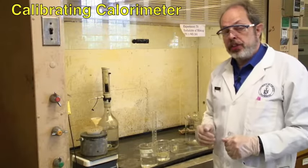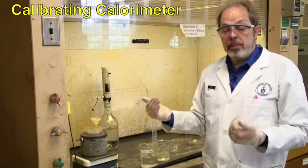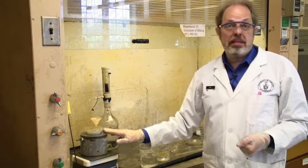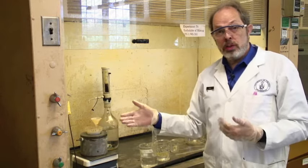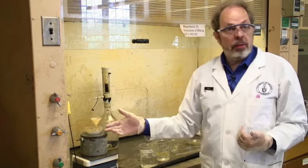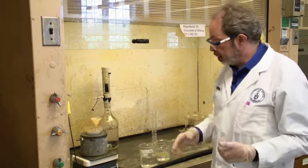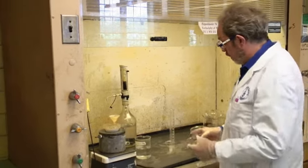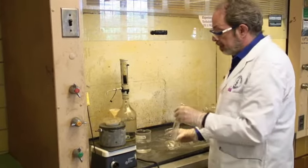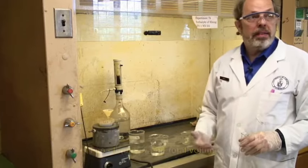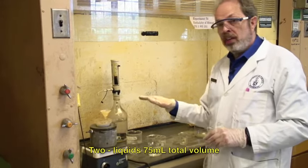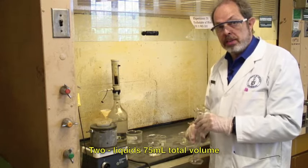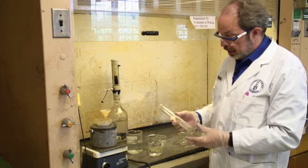The first thing we need to do with the calorimeter is to calibrate it, and you do that just by mixing hot and cold water. This is to determine the heat capacity of the calorimeter, that is, how many joules it takes to heat the calorimeter from one temperature to a slightly higher temperature. You put the cold water in first, and the capacity of the calorimeter is 75 mils. So the total of the liquids that you put in, both for the calibration and for the acid water runs, is 75 mils.